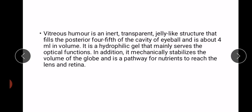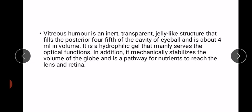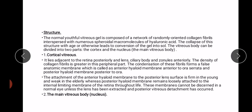The posterior four-fifths of the cavity of the eyeball is occupied by vitreous, and it is four milliliters in volume. It is a hydrophilic gel that mainly serves optical functions. In addition, it mechanically stabilizes the volume of the globe and is a pathway for nutrients to reach the lens and retina.